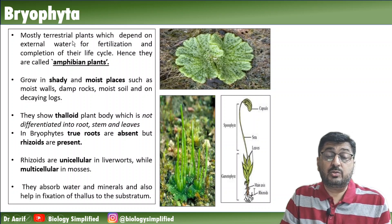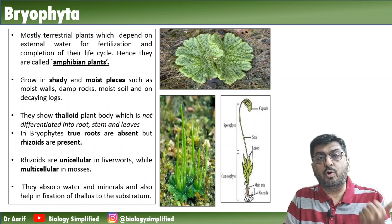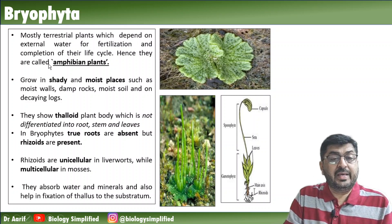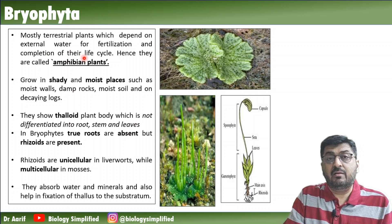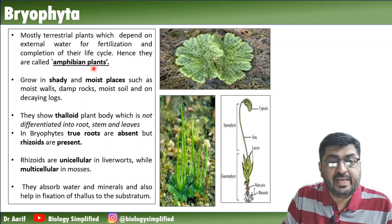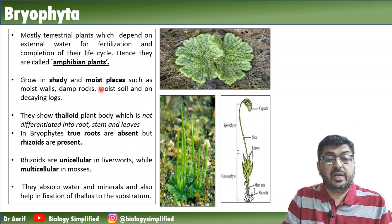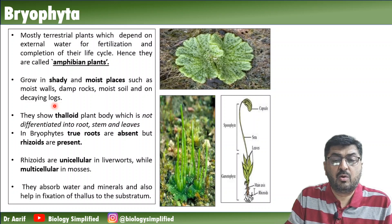Bryophytes are mostly terrestrial plants, whereas algae were mostly aquatic plants. So from water it is now moving to land. They depend on external water for fertilization and completion of the life cycle. Hence they are called amphibian plants. They grow in shady moist places such as moist walls, damp rocks, moist soil, and decaying logs.